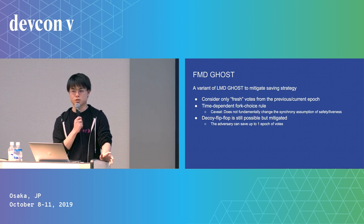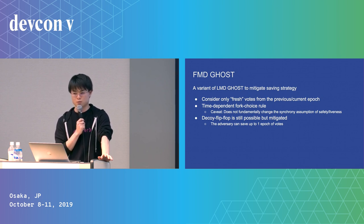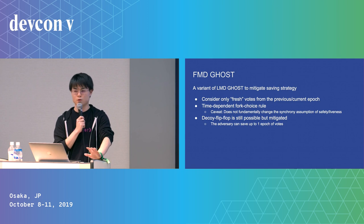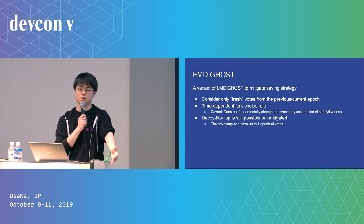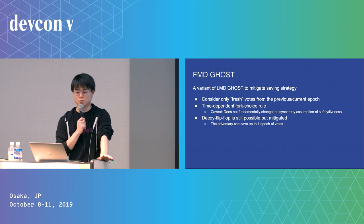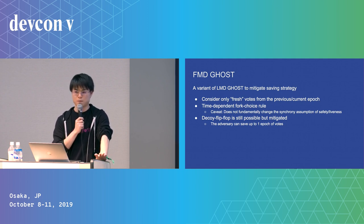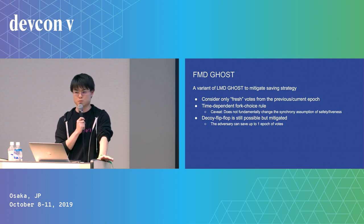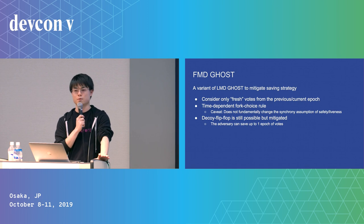A mitigation of this attack is FMD ghost, a variant of LMD ghost. In LMD ghost, every older vote is counted if it's the latest; in FMD ghost, we only count votes from the current or previous epoch. Someone might say this introduces a new synchrony assumption, but in Ethereum 2.0, FFG is decoupled from the chain, so the synchrony assumption doesn't change. However, decoy flip-flop is still possible with one epoch of savings.